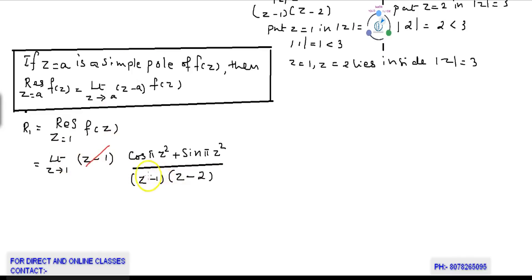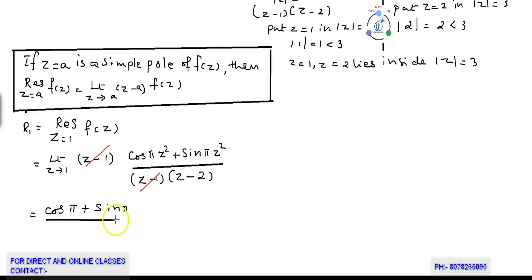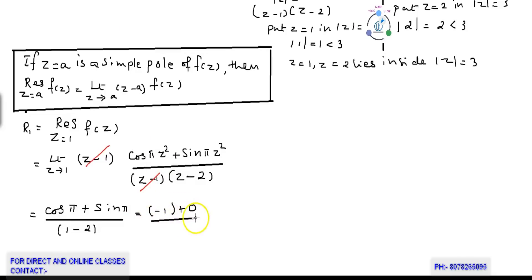For the residue at z = 1: canceling the (z−1) term and substituting z = 1 in the remaining terms, we get (cos π + sin π) / (1−2) = (−1 + 0) / (−1). The value of cos π is −1 and sin π is 0, giving residue R1 = 1.